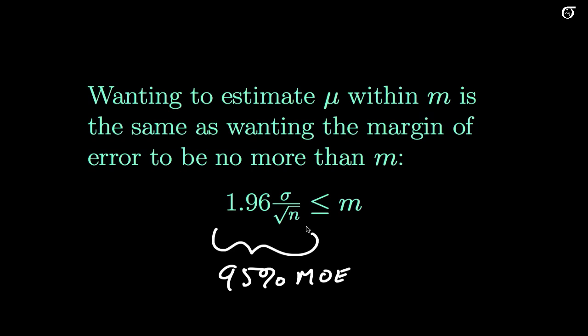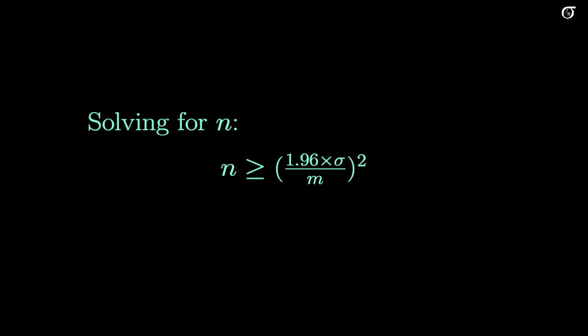At this point we're just going to use a little basic algebra. Square root of n's coming up here, m's coming back down here. We're squaring both sides, and what do we end up with? This formula: n greater than or equal to (1.96 sigma over m) squared. This is our formula for our sample size that we need to make this happen.